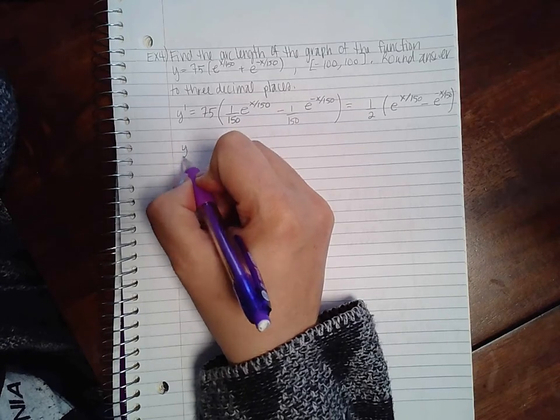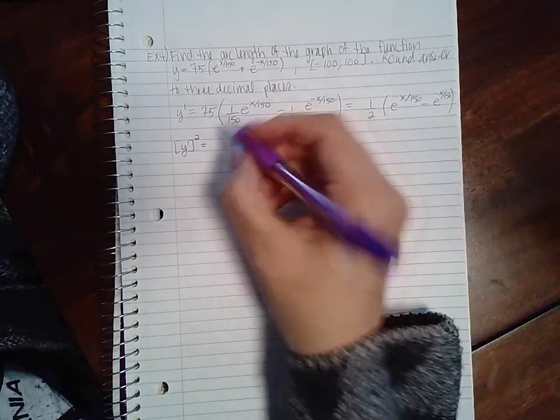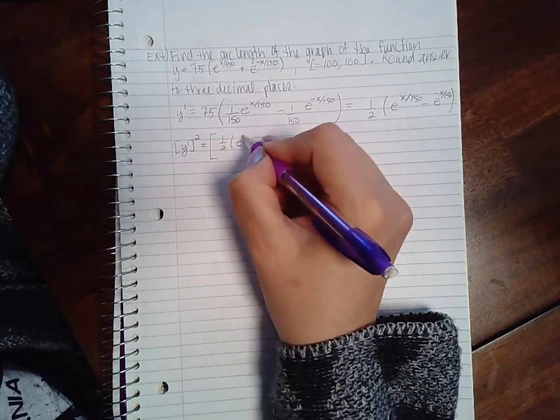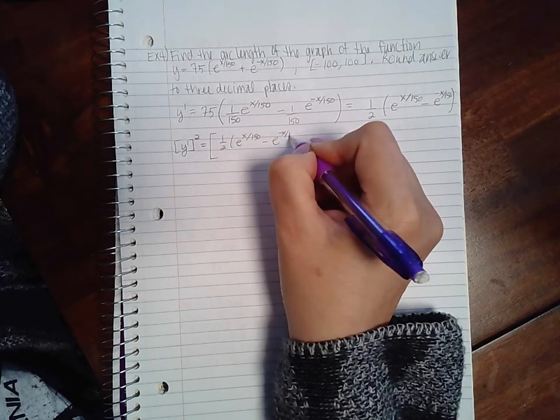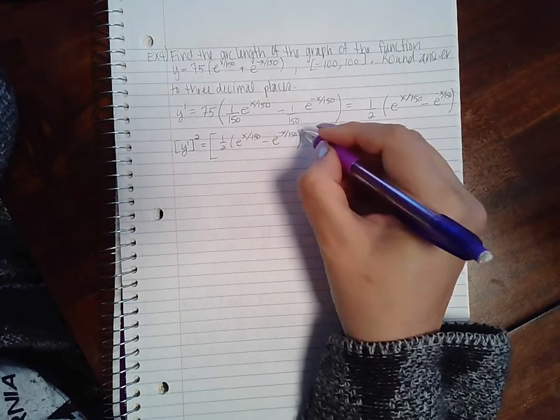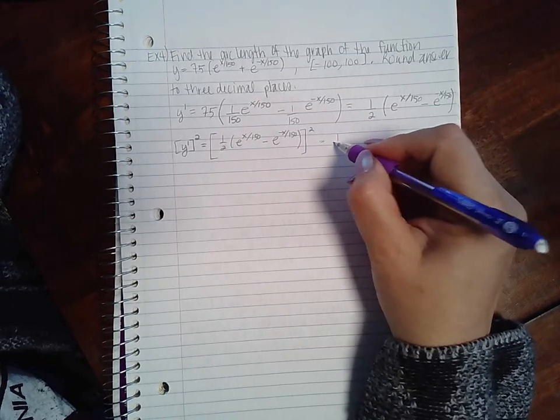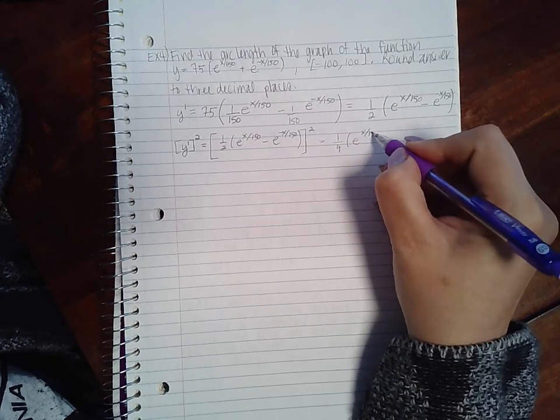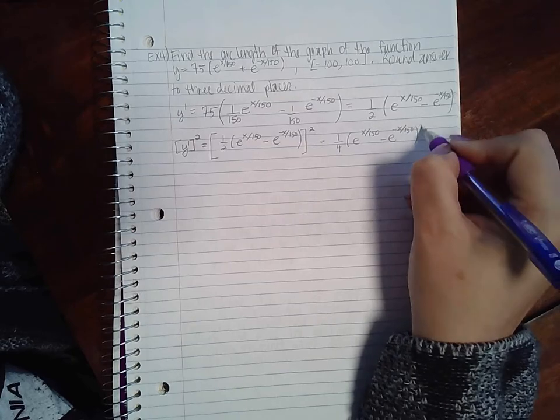Now I've got to square this. Okay so if I square this, I get 1 half times the quantity e to the x over 150 minus e to the negative x over 150 squared.